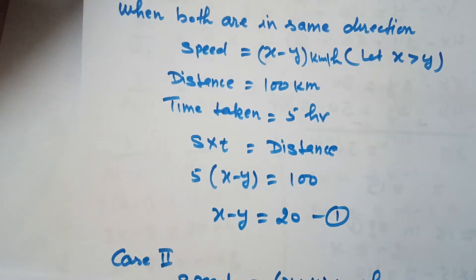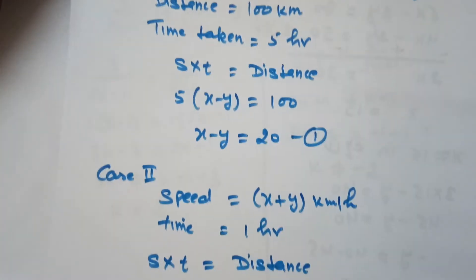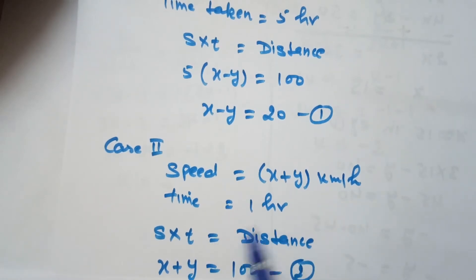The second case is when they are approaching toward each other. In this case, the speeds add up, so the average speed is (x+y). Time is 1 hour.